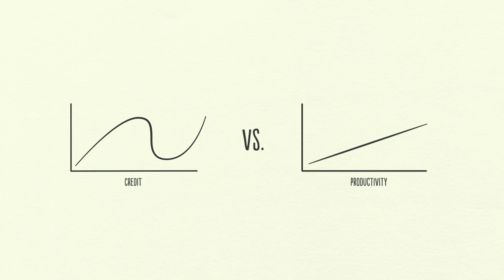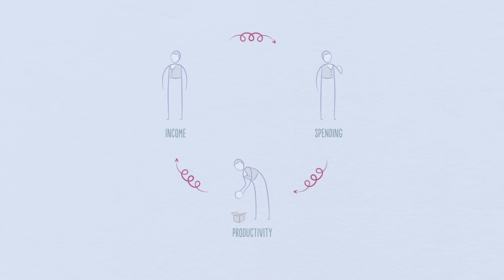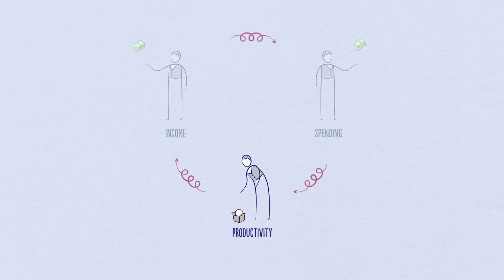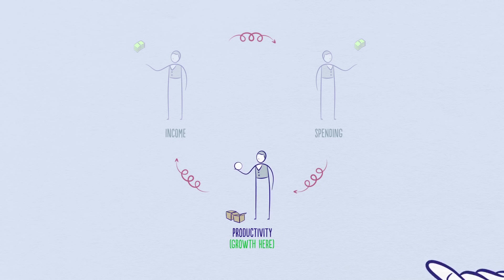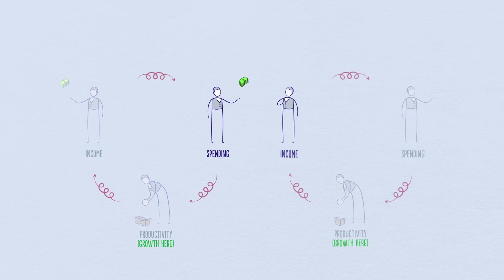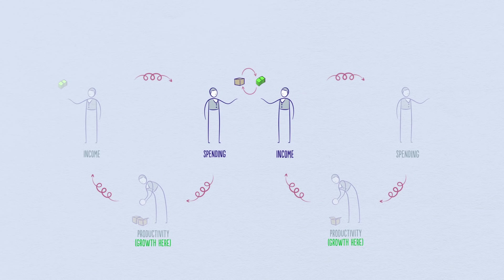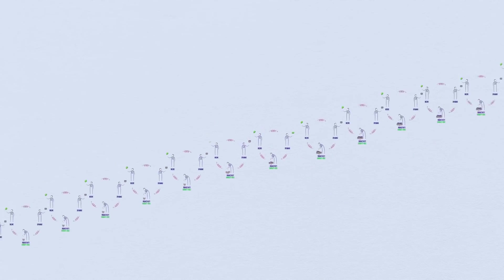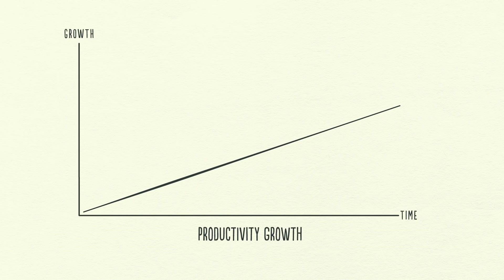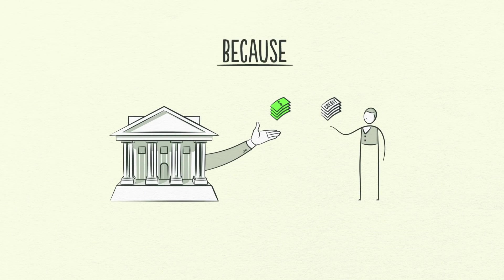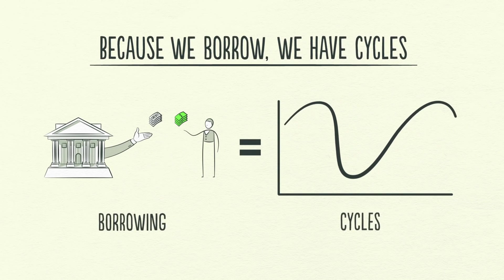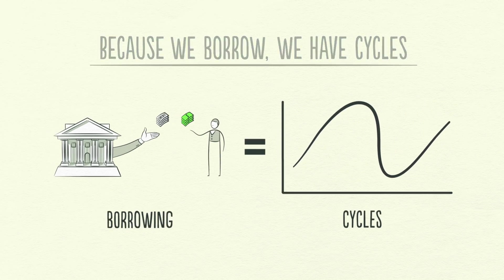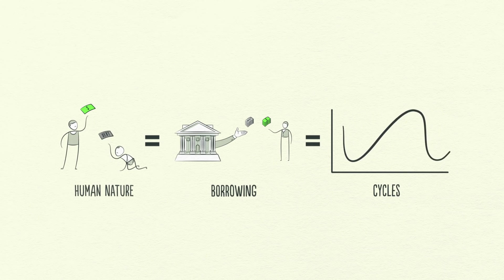Let's for a second imagine an economy without credit. In this economy, the only way I can increase my spending is to increase my income, which requires me to be more productive and do more work. Increased productivity is the only way for growth. Since my spending is another person's income, the economy grows every time I or anyone else is more productive. If we follow the transactions and play this out, we see a progression like the productivity growth line. But because we borrow, we have cycles. This isn't due to any laws or regulations — it's due to human nature and the way that credit works.